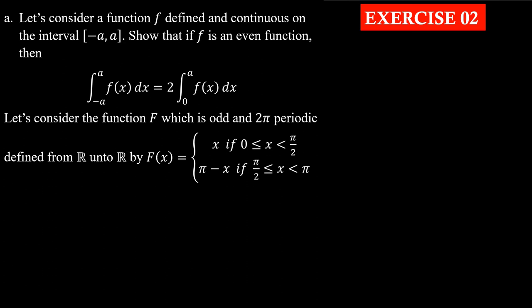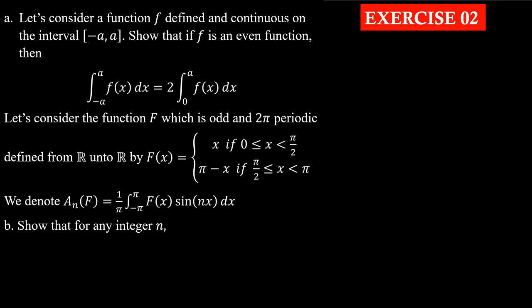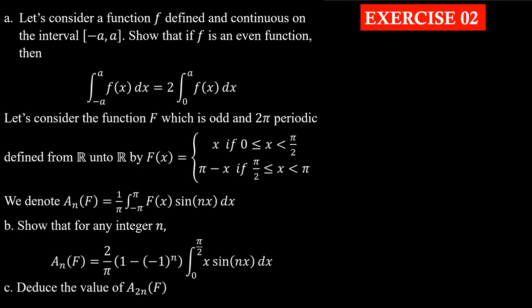Let capital F be an odd, 2π-periodic function defined from ℝ to ℝ by: F(x) = x if 0 ≤ x < π/2, and F(x) = π − x if π/2 ≤ x < π. Denote a(n, F) = (1/π) times the integral from −π to π of F(x) sin(nx) dx. Part B: show that for any integer n, a(n, F) = (2/π)(1 − (−1)ⁿ) times the integral from 0 to π/2 of x sin(nx) dx. Part C: deduce the value of a(2n, F).